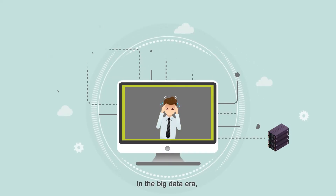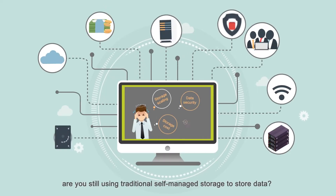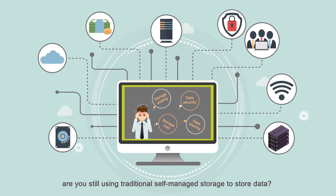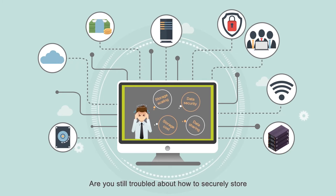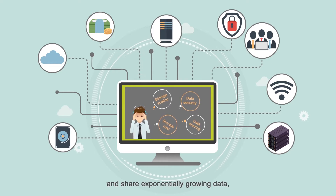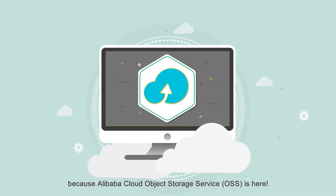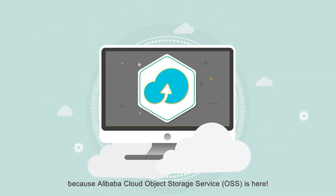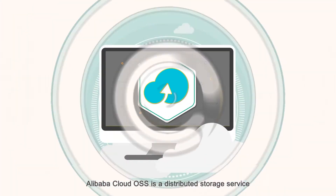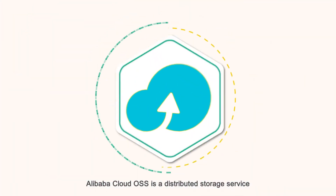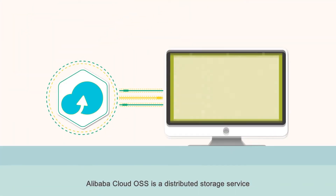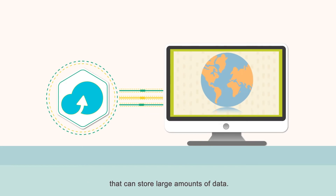In the big data era, are you still using traditional self-managed storage to store data? Are you still troubled about how to securely store and share exponentially growing data and the costs involved with this process? Look no further, because Alibaba Cloud Object Storage Service OSS is here. Alibaba Cloud OSS is a distributed storage service that can store large amounts of data.